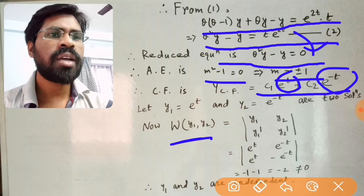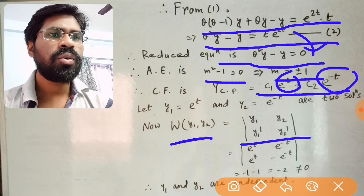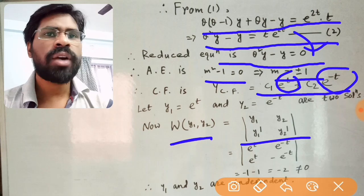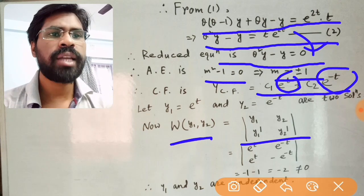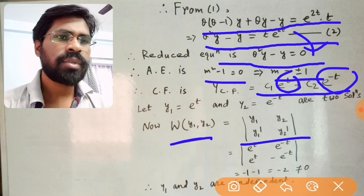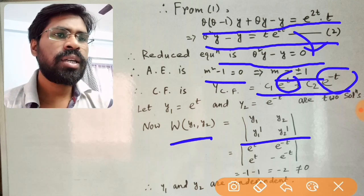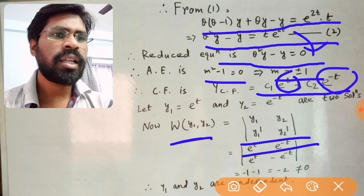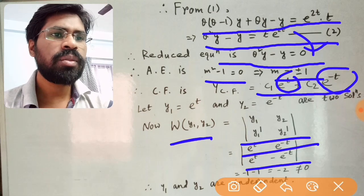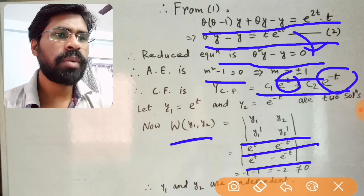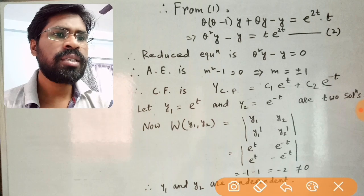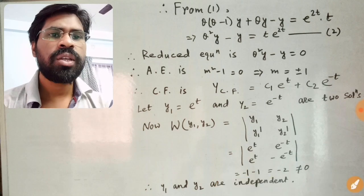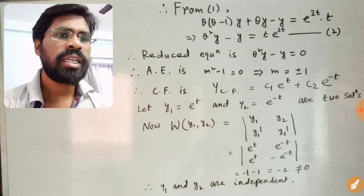The Wronskian of y₁ and y₂ is a 2×2 determinant with y₁, y₂ in the first row and y₁', y₂' in the second row. That gives e^t, e^{-t}, e^t, −e^{-t}, so the determinant value is −2, which is not equal to 0. Therefore y₁ and y₂ are independent.